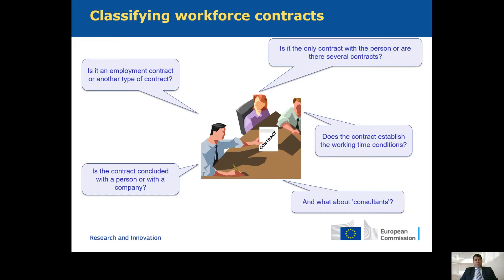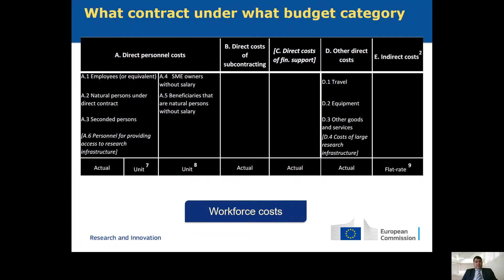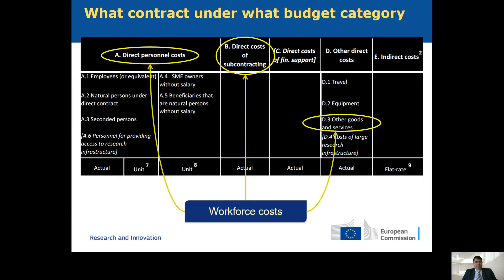The first thing you need to master is to be comfortable with how you classify workforce contracts, because depending on the answers to questions like whether it's an employment contract, whether it's with a person or a company, where the people work, or how many contracts they have — the contract may be eligible under personal cost, subcontracting, or other goods and services. This is a very important topic.